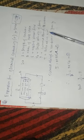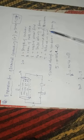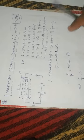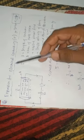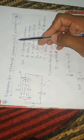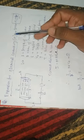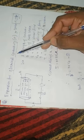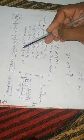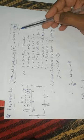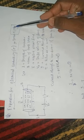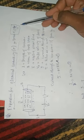We derived the drift velocity equation. Now we have to derive the expression for electrical conductivity, that is sigma. Using the drift velocity, we derive the expression for sigma equal to n e squared into tau divided by m.